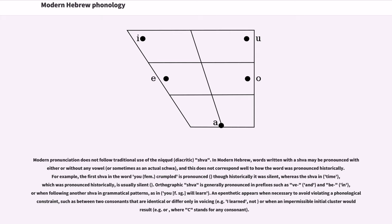For example, the first schwa in the word 'you (fem) crumpled' is pronounced e, though historically it was silent, whereas the schwa in 'time', which was pronounced historically, is usually silent. Orthographic schwa is generally pronounced in prefixes such as ve (and) and b (in), or when following another schwa in grammatical patterns, as in yilmad (will learn).